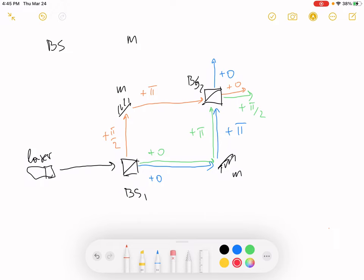And finally the fourth path. Reflect off the first beam splitter. Plus pi over two. Reflect off the mirror. Plus pi. And then reflect off the second beam splitter. Plus pi over two.